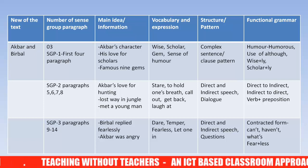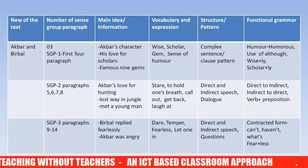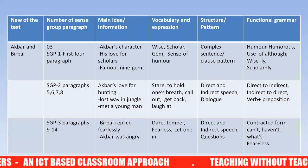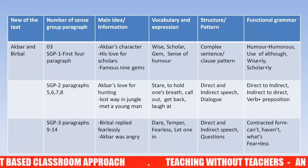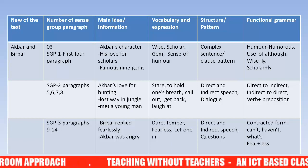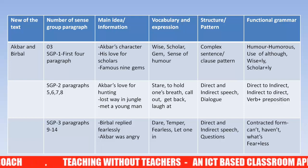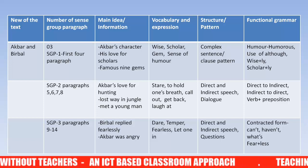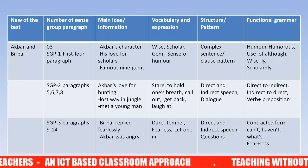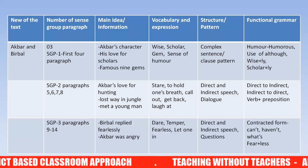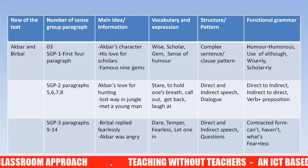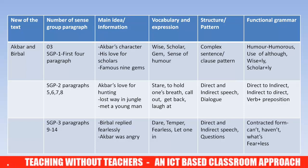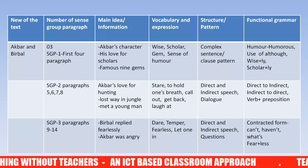We will put those things into this format. First, we write the name of the text, then prepare the plan for the particular SGP, including: main ideas in that SGP, vocabulary and expressions, structure and pattern, and functional grammar. We divided the topic into three SGPs — SGP one contains three paragraphs, SGP two contains four paragraphs, and SGP three contains the remaining paragraphs.